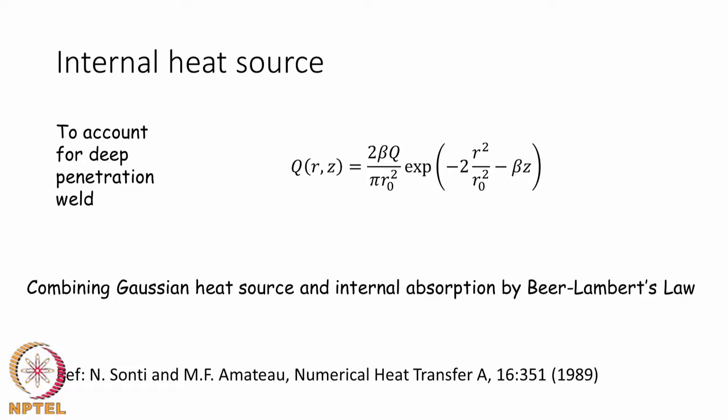Beer-Lambert's law is often applicable to describe how laser light is absorbed as it goes through the vapor column. This can be merged with the Gaussian heat source to get what is called the internal volumetric heat source for deep penetration welding in laser keyhole mode. The Gaussian component and the Beer-Lambert's law term e^(−βz), where β is the absorption coefficient, are combined.